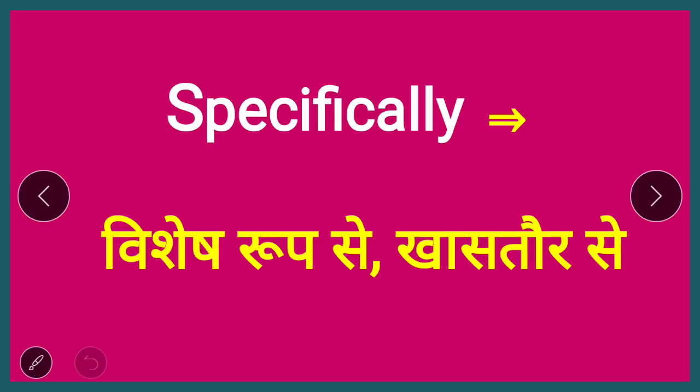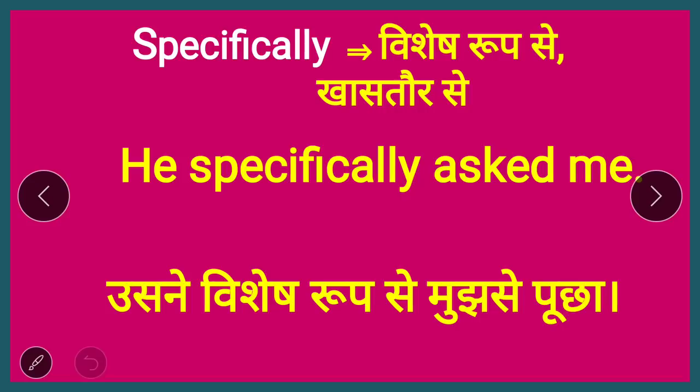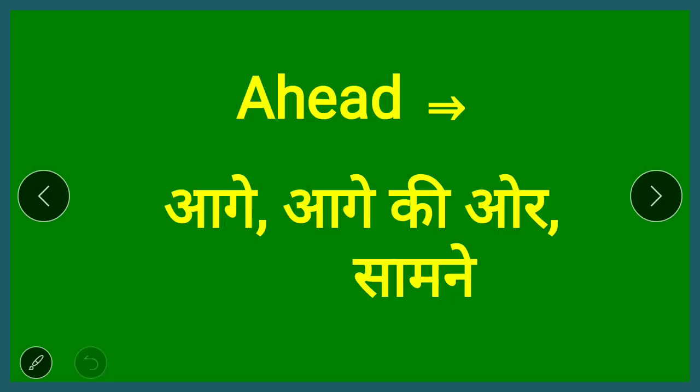The next word is 'specifically,' used when something applies to one particular person or thing. For example: 'He specifically asked me.' There were many people at the party, but he asked me specifically — that is how you use 'specifically.'